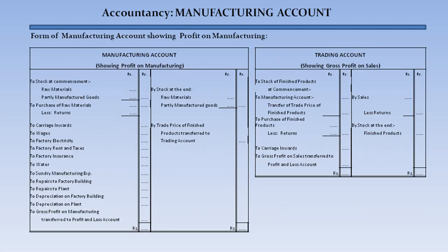The form of manufacturing account showing profit on manufacturing will show on the debit side: stock at commencement of raw materials and partly manufactured goods, purchases of raw materials less returns, carriage inwards, wages, factory electricity, factory rent and taxes, factory insurance, water, sundry manufacturing expenses, repairs to factory building, repairs to plant, depreciation on factory building, and depreciation on plant. On the credit side: stock at end of raw materials and partly manufactured goods, and the trading price of finished products transferred to trading account, arriving at gross profit on manufacturing transferred to profit and loss account.